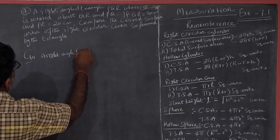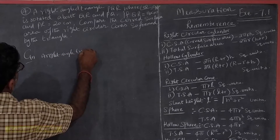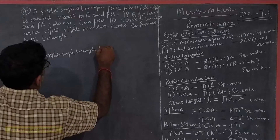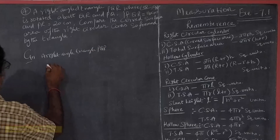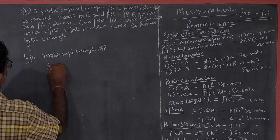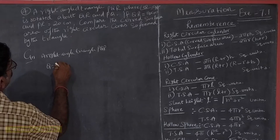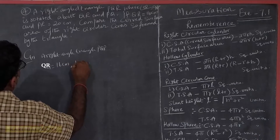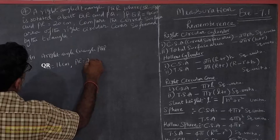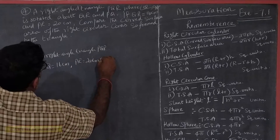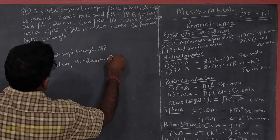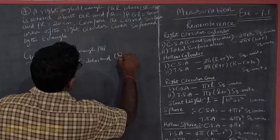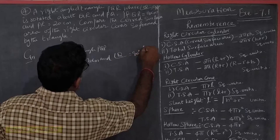We have the right angle triangle PQR. QR is equal to 16 cm. PR is equal to 20 cm. Angle Q is equal to 90 degrees.